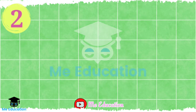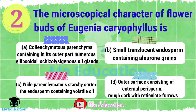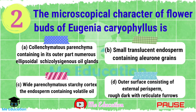Next question: The microscopical character of flower buds of Eugenia caryophyllus is: Option A — collenchymatous parenchyma containing in its outer part numerous ellipsoidal schizogenous oil glands; Option B — small translucent endosperm containing aleurone grains; Option C — wide parenchyma with starchy cortex, the endosperm containing volatile oil; Option D — outer surface consisting of external perisperm rough dark with reticulate furrows. Now pause the video. The right answer is A.